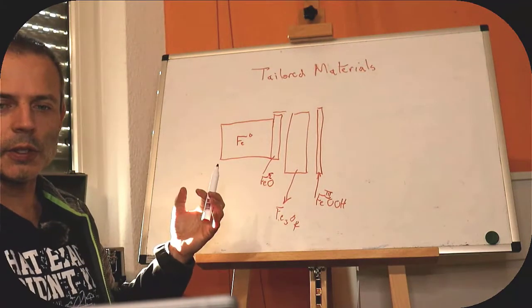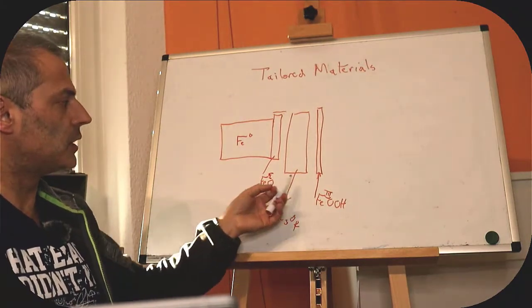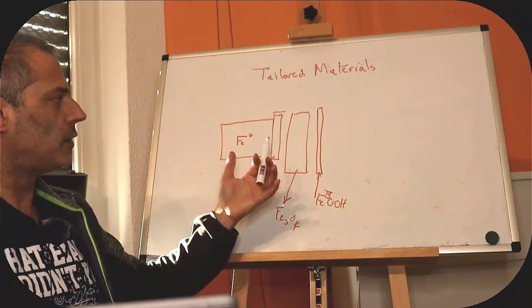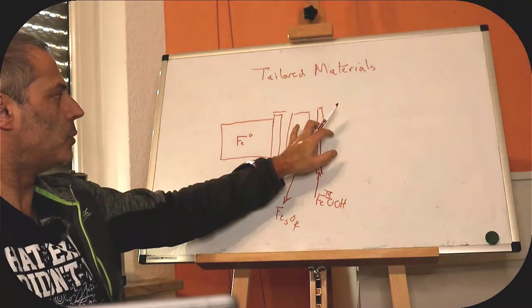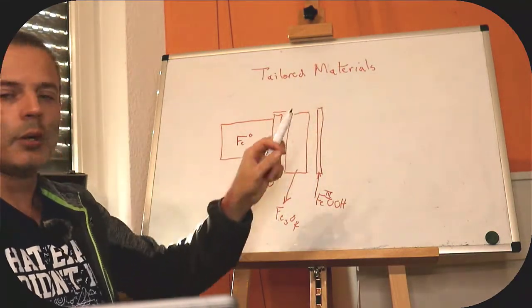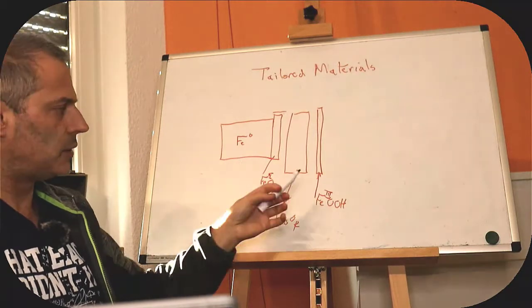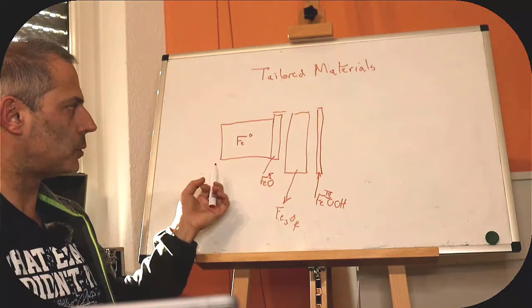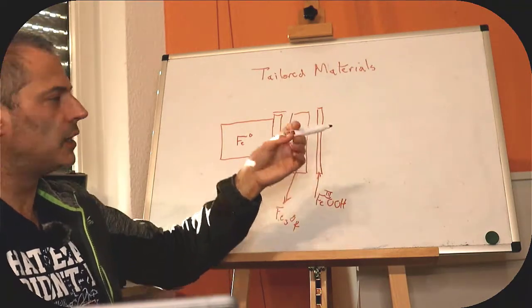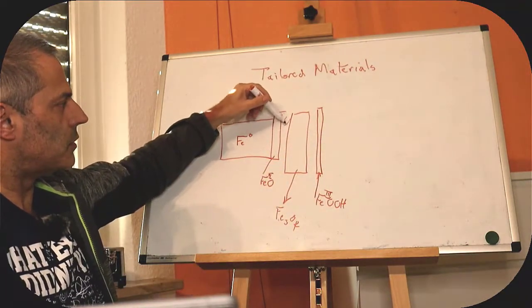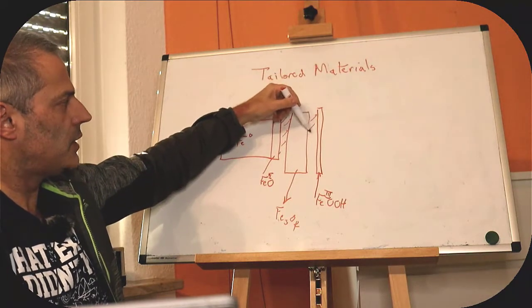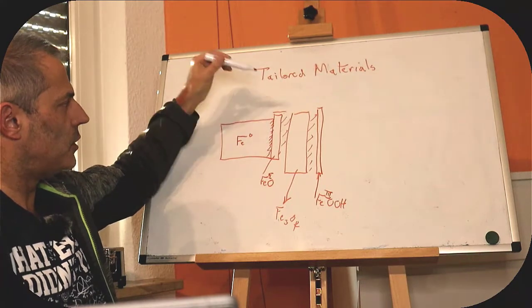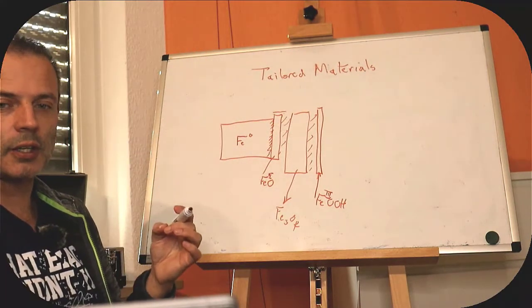But normal iron oxide rust doesn't exist in connection with the atmosphere. In connection with the atmosphere, we would expect there to be iron three. And if we're connected to iron zero, we would expect there to be iron two. So we would expect some kind of gradient in these materials. In between these materials, there will be less defined materials.